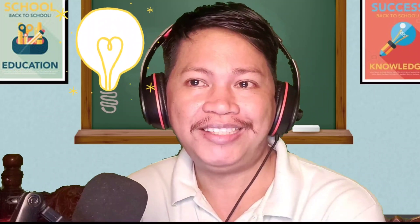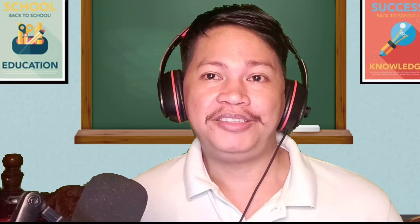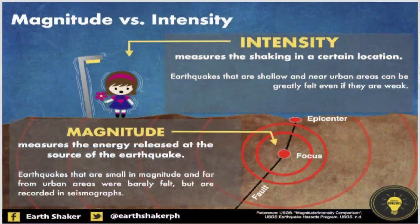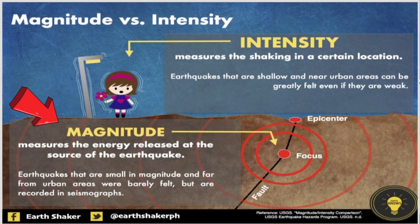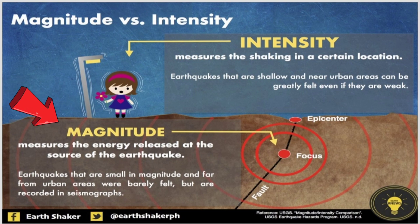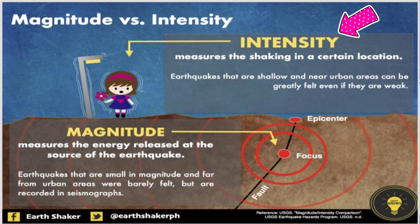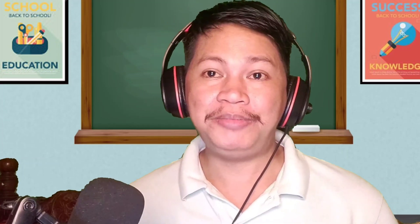To understand better, here is another explanation of the difference between magnitude and intensity. Magnitude measures the energy released at the source of the earthquake — from the focus. Earthquakes that are small in magnitude and far from urban areas are barely felt but are recorded on a seismograph. Intensity measures the shaking in a certain location. Earthquakes that are shallow and near urban areas can be greatly felt even if they are weak.